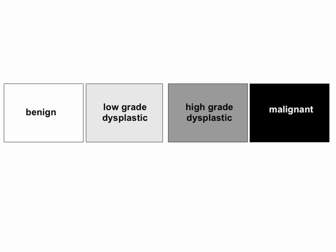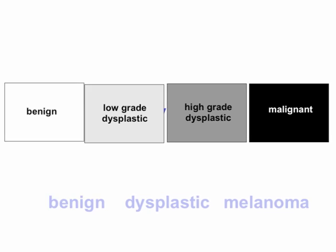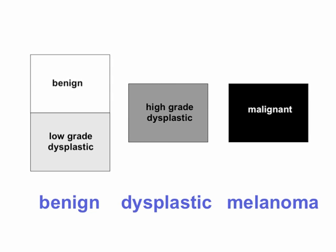There are some pathologists that read them out as benign, dysplastic — regardless of low-grade or high-grade — and melanoma, giving three groups. And there are some pathologists who put the benign and low-grade dysplastic in one benign category, call only the high-grade dysplastic 'dysplastic,' and call the malignant lesions melanoma.